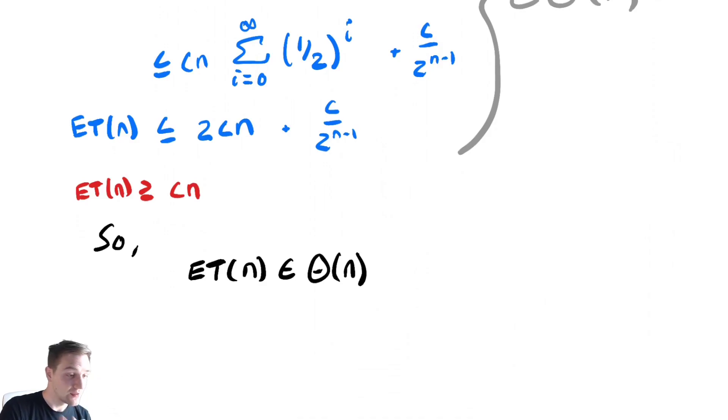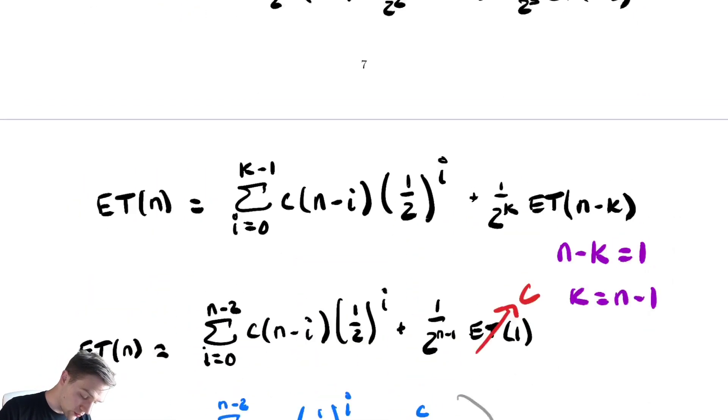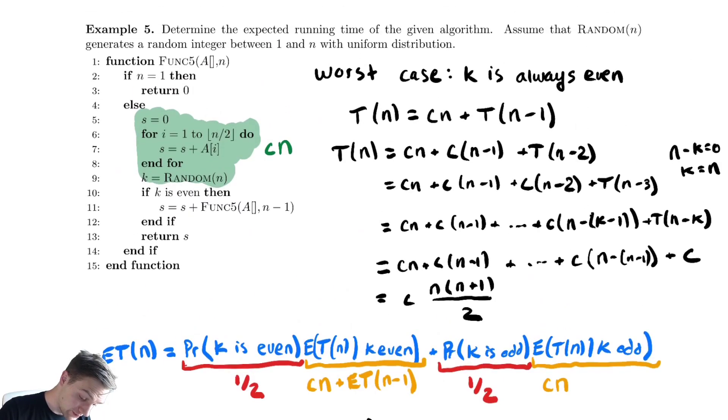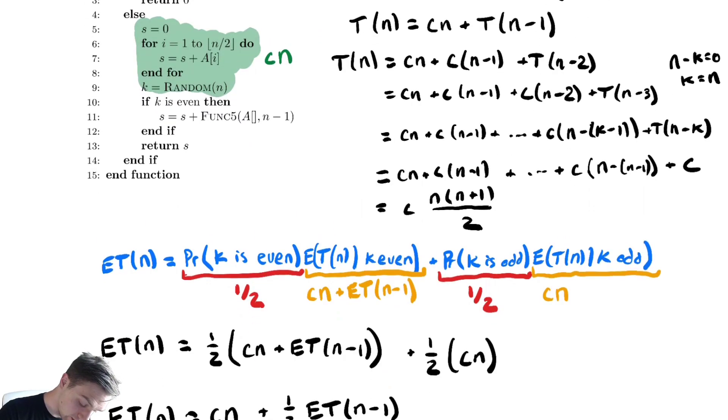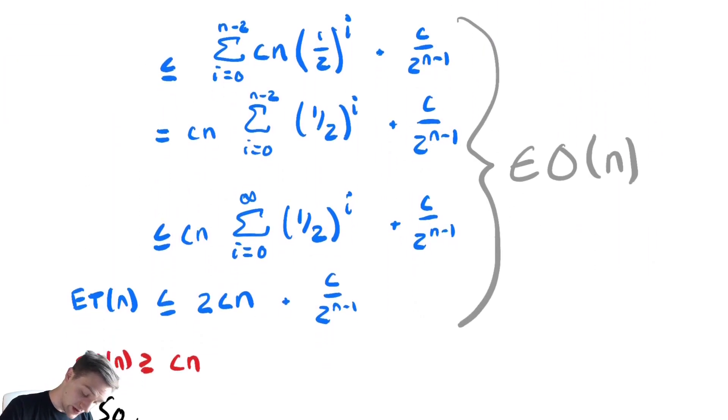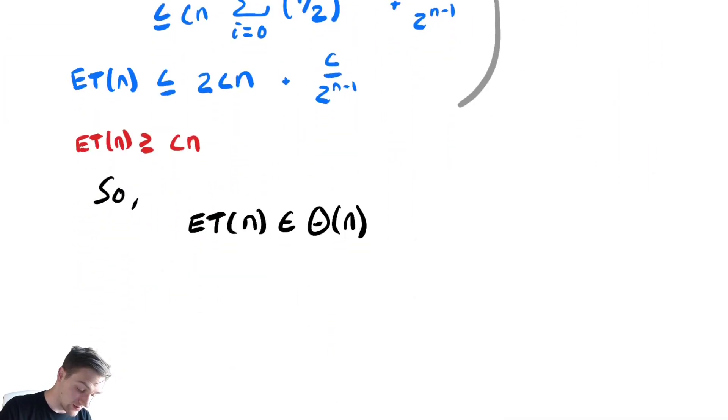Which is different than our worst case. If we scroll up, our worst case was theta of n squared, which I never wrote down. And our best case is actually cn or theta of n. So, here our expected runtime was theta of n.